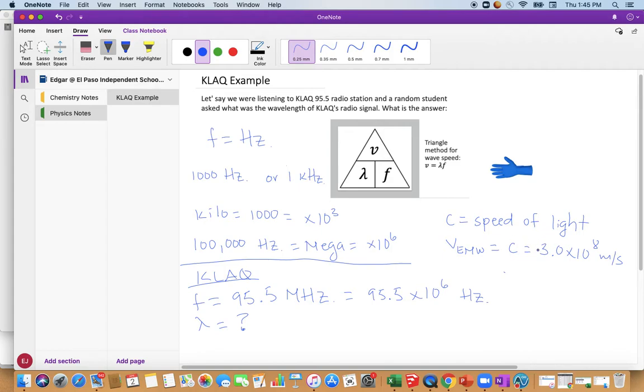Don't forget the units. This is the velocity or the speed of radio waves. VEMW equals 3.0 times 10 to eighth meters per second. We have frequency, velocity, we need wavelength. Let's work on using the triangle from the lesson.